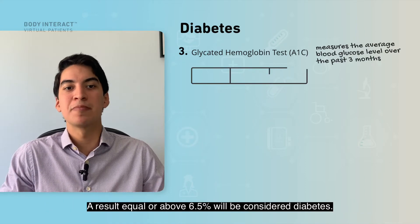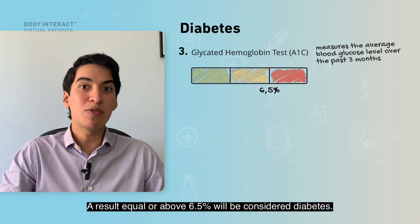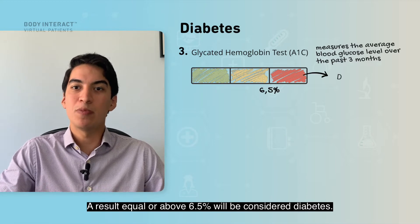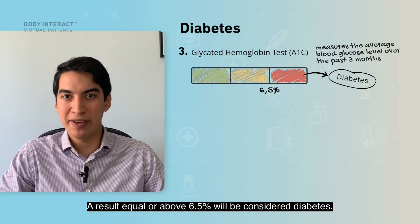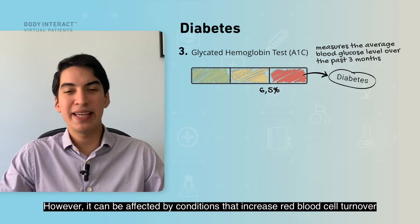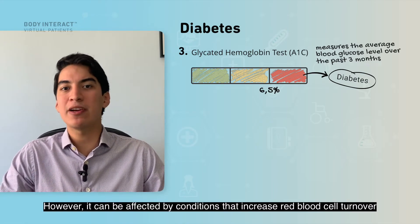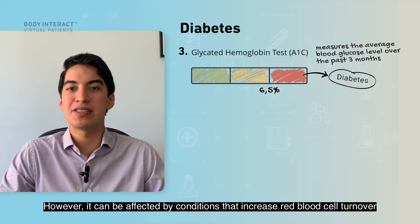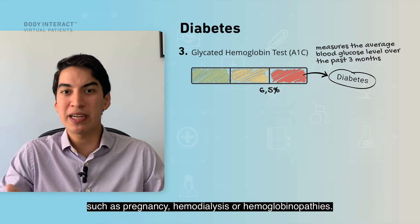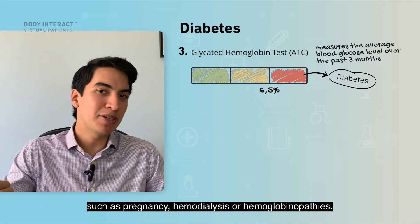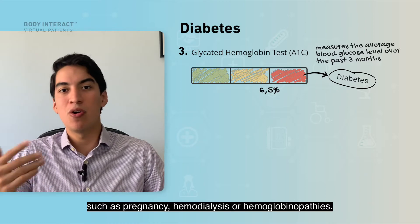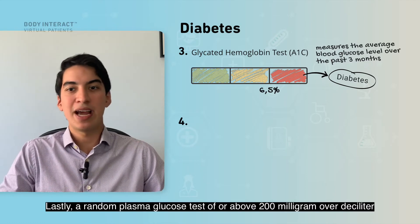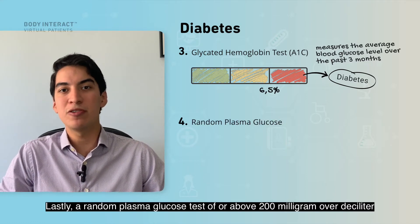A result equal to or above 6.5% is considered diabetes. However, the A1C can be affected by conditions that increase red blood cell turnover, such as pregnancy, hemodialysis, or hemoglobinopathies.